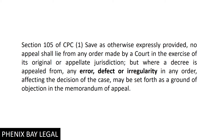Now, some common applications where you can see these issues. First, take your stay application under Order 39 Rule 1, 2, or 3. In the stay application, if there is an error, defect, or irregularity, you can appeal against it. In Order 39 Rule 1 and 2, there is a provision for appeal, so that is a separate thing — but I have told you.